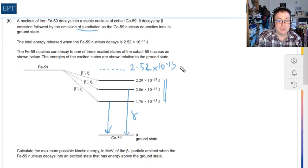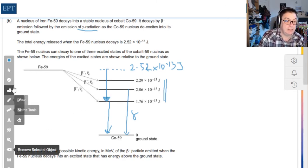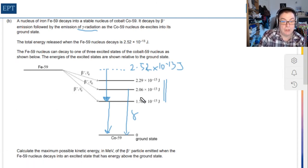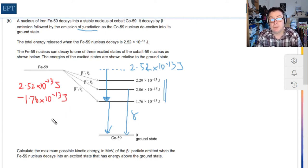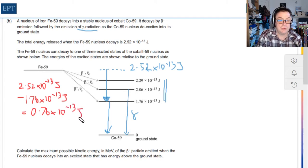If we consider that our Iron nucleus starts at 2.52 times 10 to the minus 13 joules, the biggest drop is going to be from that top level to the level 1.76. That is when the electron is going to carry away the most energy. The Iron begins at 2.52 times 10 to the minus 13 joules and becomes Cobalt at 1.76 times 10 to the minus 13 joules. If we take those two numbers away, that will be the amount of energy shared, and that corresponds to 0.76 times 10 to the minus 13 joules.